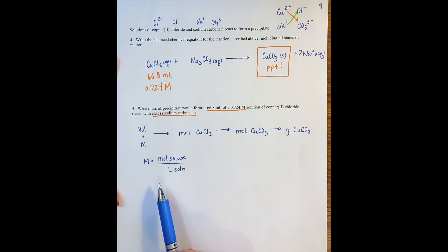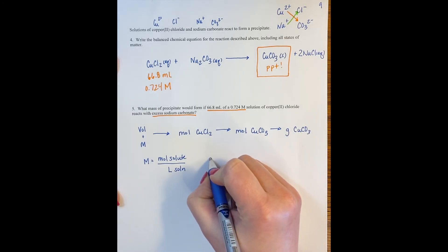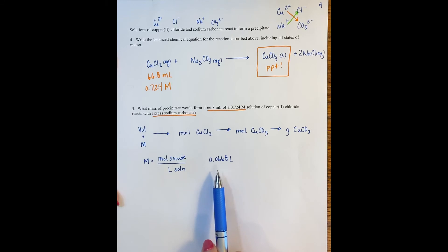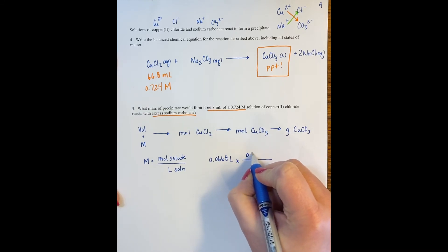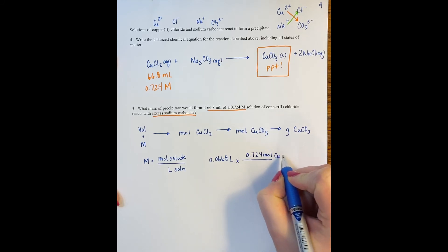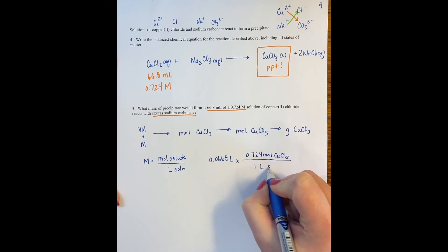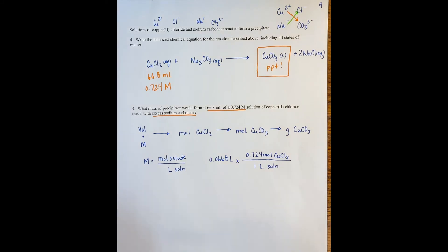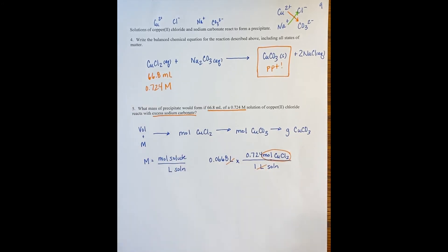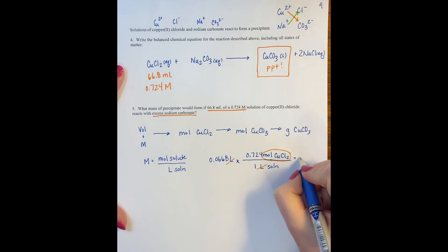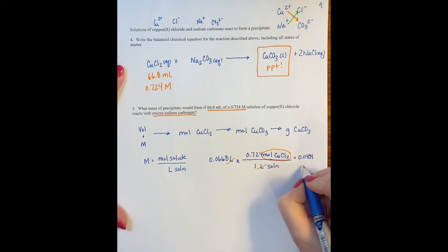You can plug right into the molarity equation and solve, or set it up as dimensional analysis — either way should give you the same answer. Using dimensional analysis, I take 0.0668 liters — that's the conversion from 66.8 milliliters to liters. I multiply by 0.724 moles of copper chloride per 1 liter of solution. My units of liters cancel, leaving me with moles of copper chloride. When you do this calculation, you should get 0.0484 moles of copper chloride.